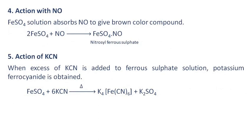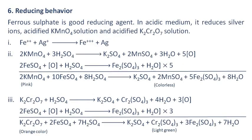Action with nitric oxide: ferrous sulfate solution absorbs nitric oxide to give a brown color compound. Action of potassium cyanide: when excess of potassium cyanide is added to ferrous sulfate solution, potassium ferrocyanide is obtained. Reducing behavior: ferrous sulfate is a good reducing agent. In acidic medium, it reduces silver ions, acidified potassium permanganate solution, and acidified potassium dichromate solution.